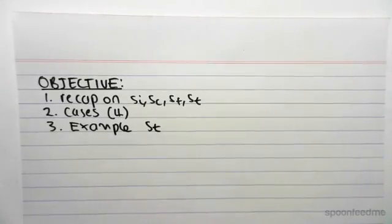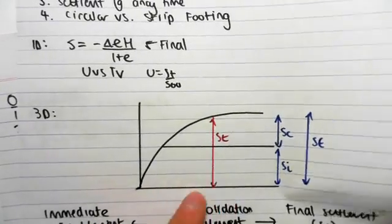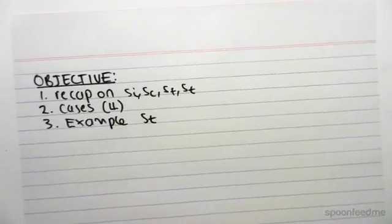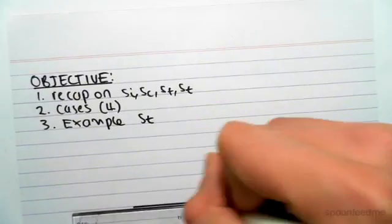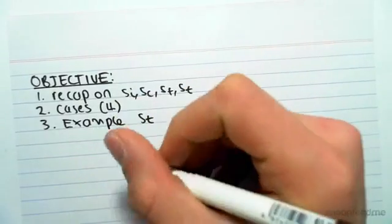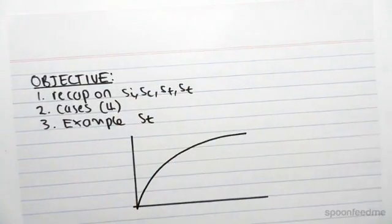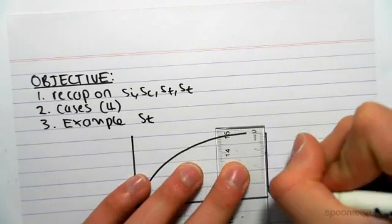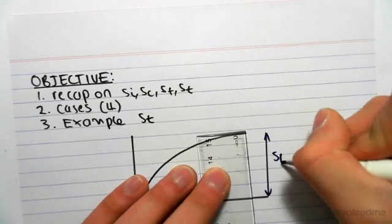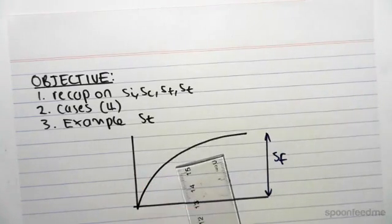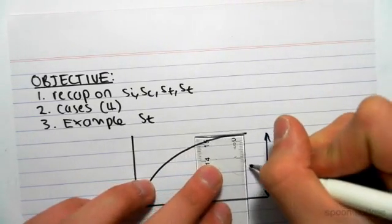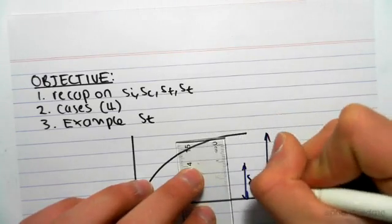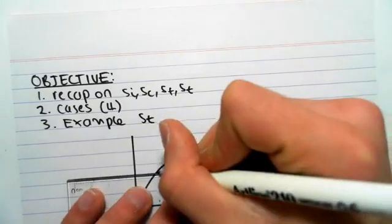So just a quick recap, in the first video we looked at this graph. I'm just quickly going to discuss it again because it is very important. So we have the settlement against time. This value here would be the settlement final, so the final settlement. Initially we're going to get an initial settlement, so SI, which would say be there.